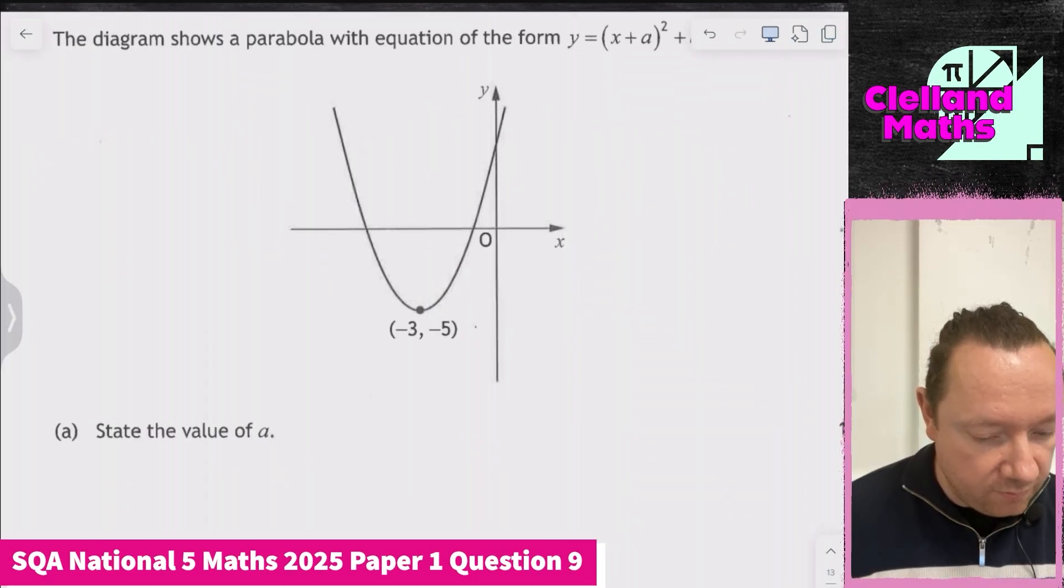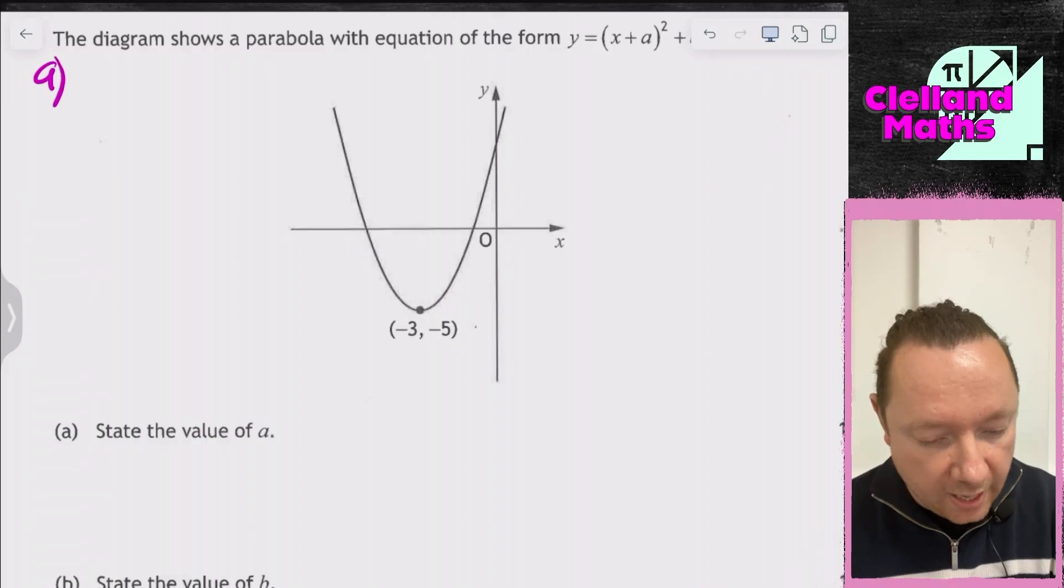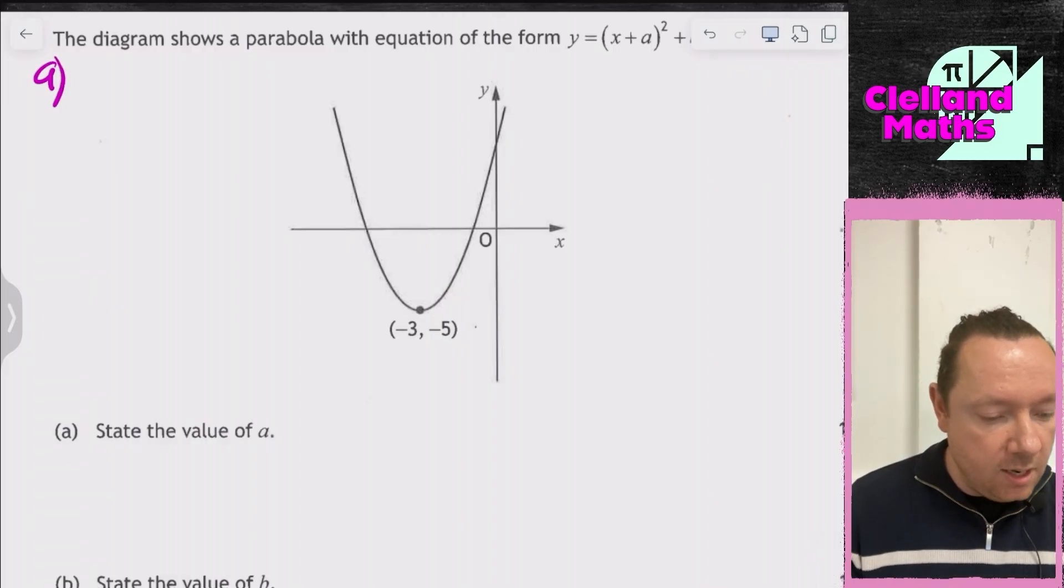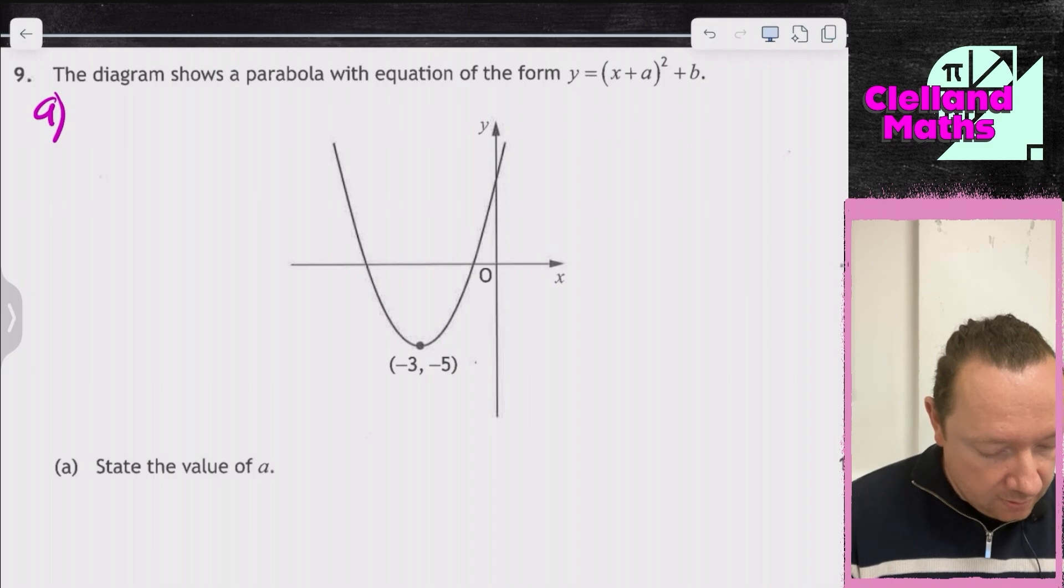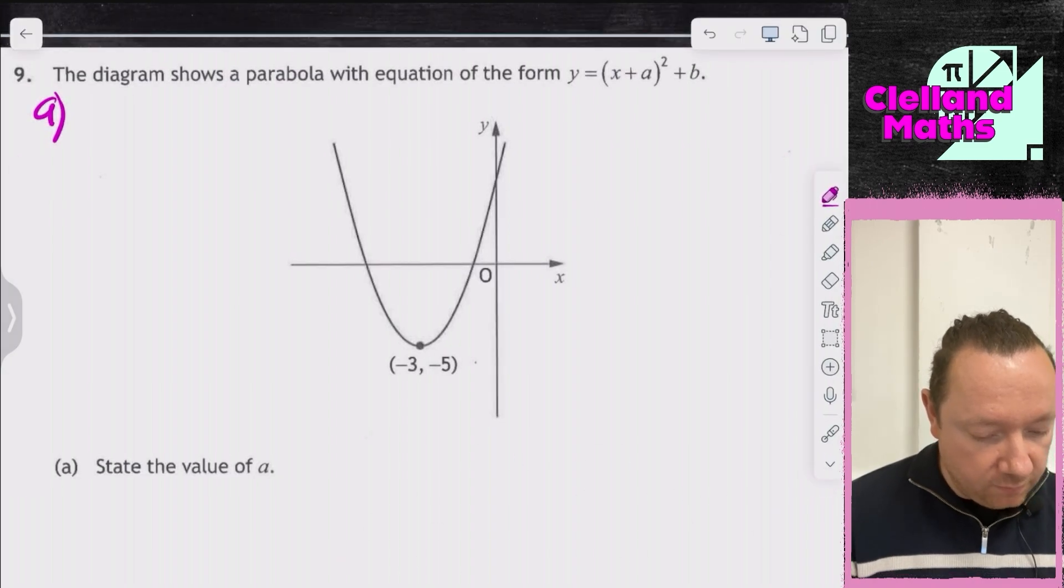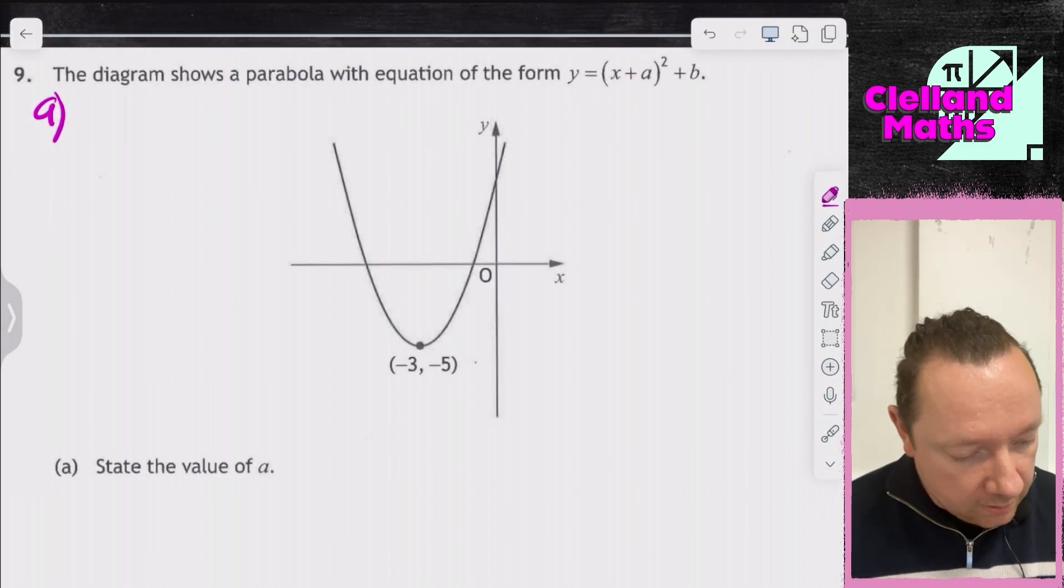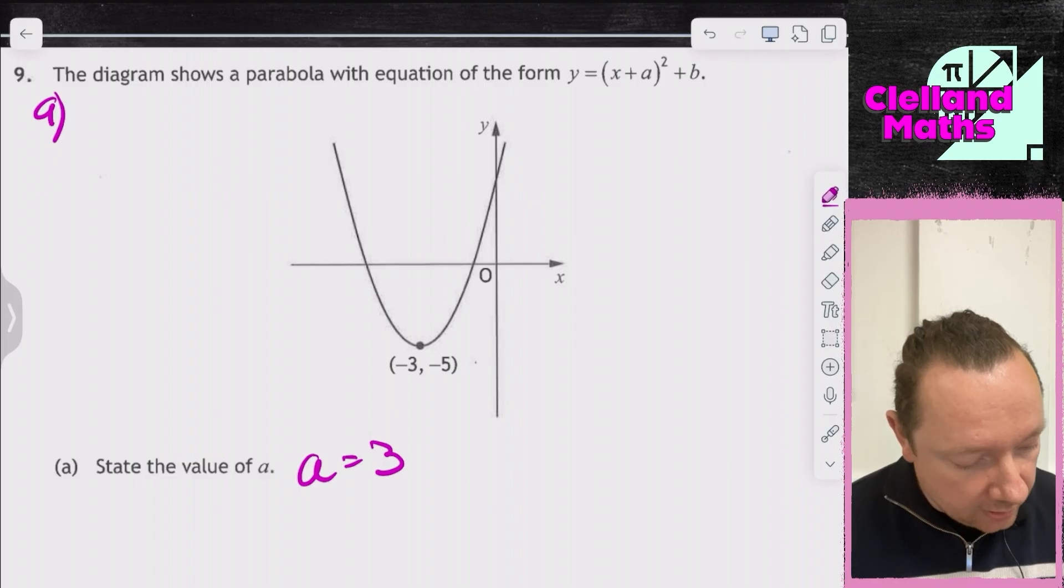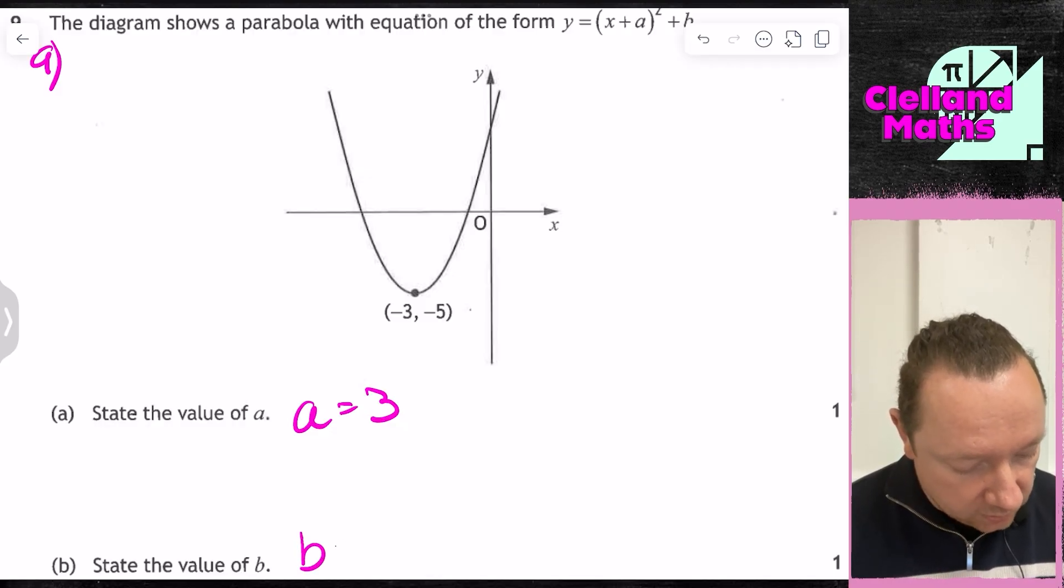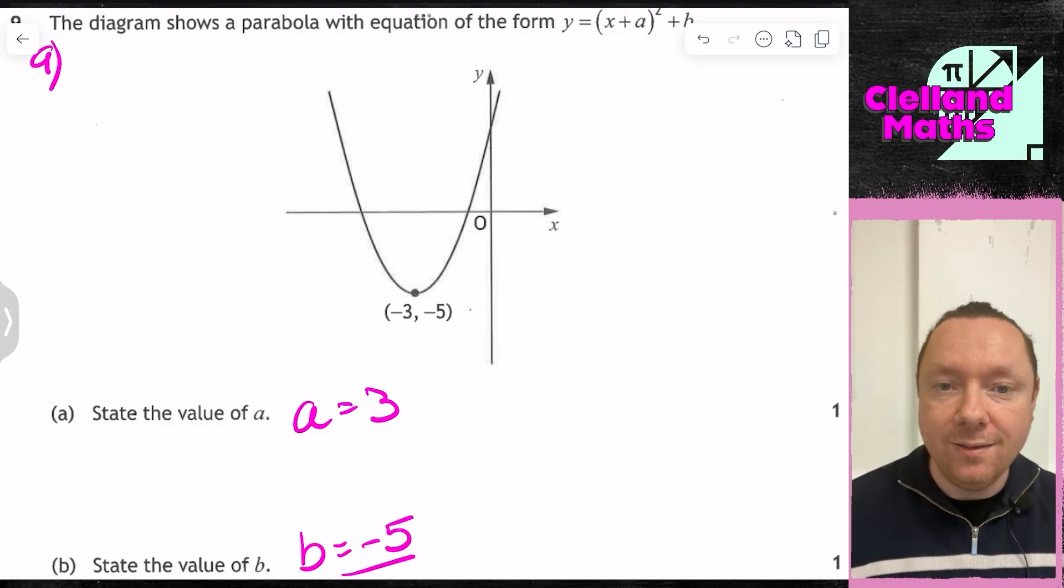National Five Maths 2025 paper 1 question 9. The diagram shows a parabola with equation of the form x plus a squared plus b. It says find the value of a and b. All you need to remember is that one changes sign. So it's minus 3, so it changes back to 3. And this one does not change sign, so it's still just minus 5. So b is minus 5. And we're done there.